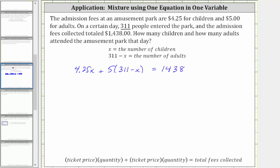Now we need to solve the equation. The first step is to simplify by clearing the parentheses on the left side by distributing five. Distributing five gives us 4.25x plus 5 times 311 is equal to 1,555. And then we have five times negative x, which gives us minus 5x, which is equal to 1,438.